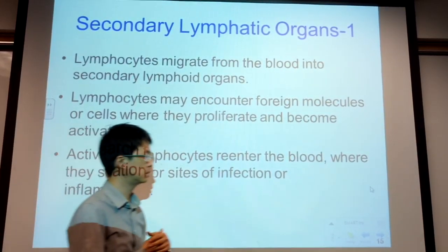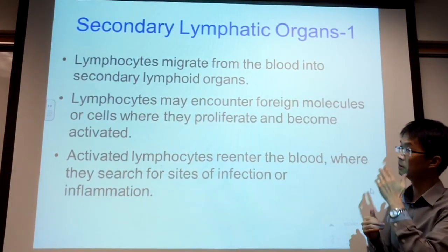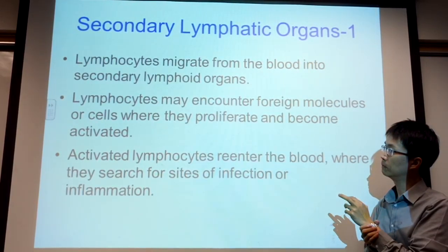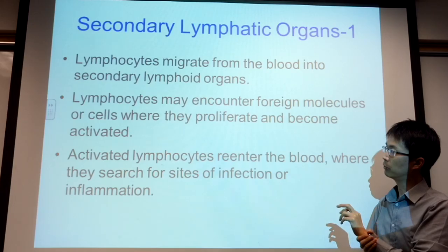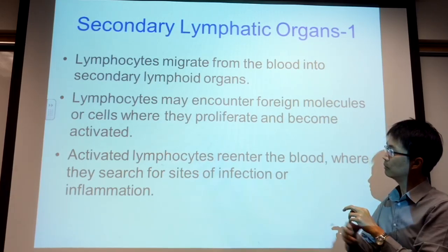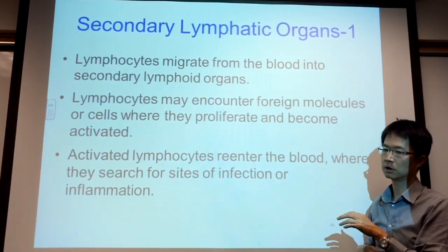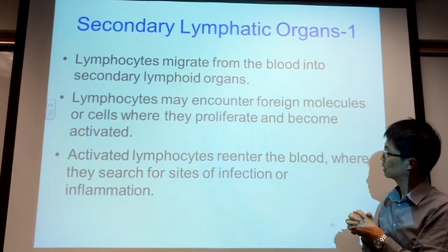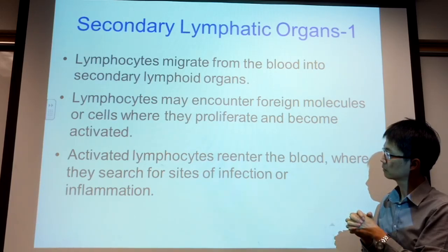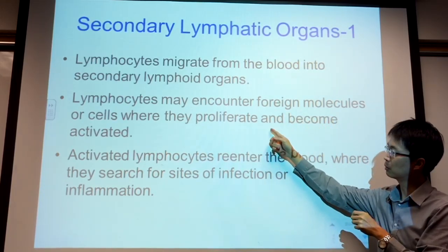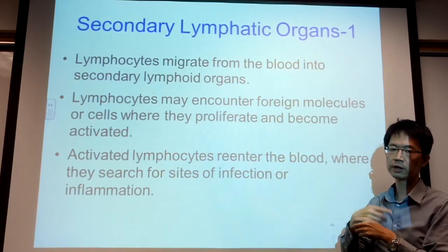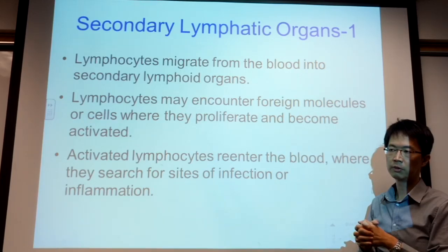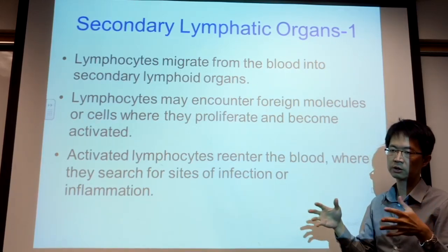Lymphocytes migrate from the blood into the secondary lymphoid organs, where they may encounter molecules from microbes such as bacteria or viruses. When they encounter foreign material, they proliferate — they clone themselves — to build up enough numbers to fight the infection.